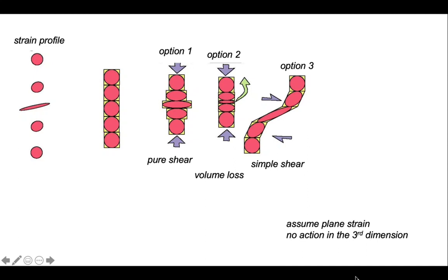Option two also shows a similar strain gradient, but is developed not simply through constant volume deformation in pure shear, but by volume loss.